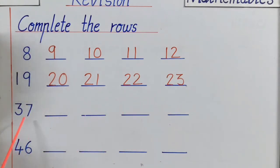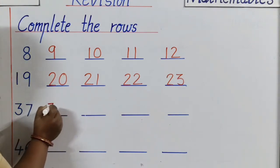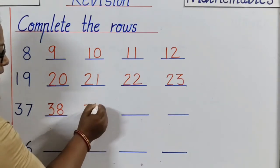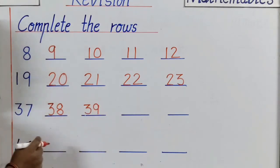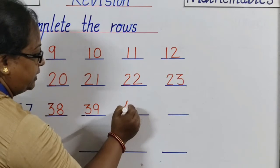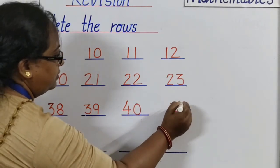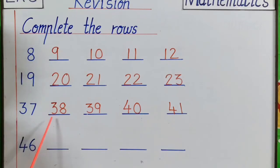Go to next line. What number is it? Yes. 37. After 37? 38. Then? 39. After 39? Very good. 40. And after 40? 41. We have completed the line.